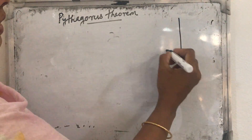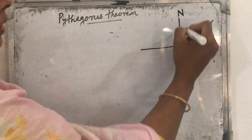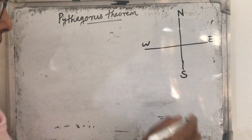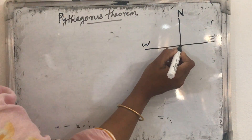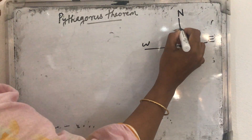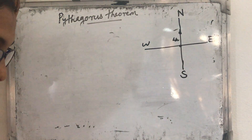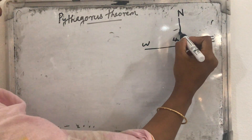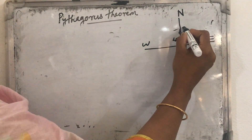So we know the directions are like this: north, south, east, west. Abay drives 4 km to the north — suppose this is the starting point. He drives 4 km to the north, then 3 km to the east. East is this direction, so this is 3 km.